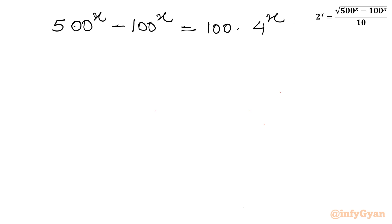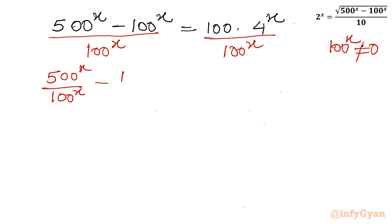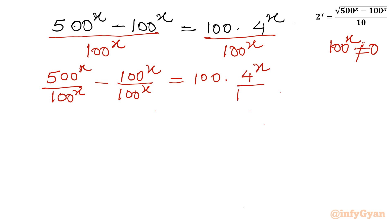Now I will consider division of both sides. I will divide both sides by 100^x. As we know, an exponential function cannot intersect the x-axis, so this won't be zero. Now I will split: (500^x / 100^x) - (100^x / 100^x) = 100 × (4^x / 100^x).